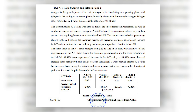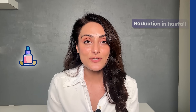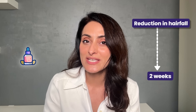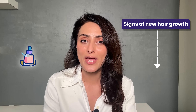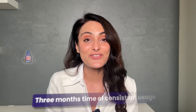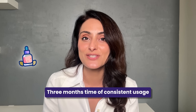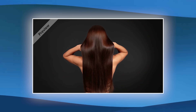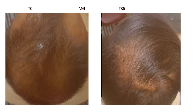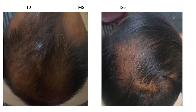According to the study shared by the brand, the serum was tested on 36 people. The average anagen-to-telogen ratio was 5.6, and after three months of using the serum, the ratio had increased to 9.65, which is very appreciable. The serum shows reduction in hair fall in two weeks and first signs of new hair growth in about three weeks. In three months of consistent usage, you will be able to notice an improvement in hair density. You can see the before and after pictures of the study here.